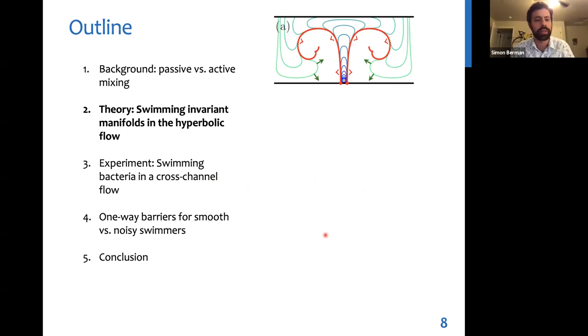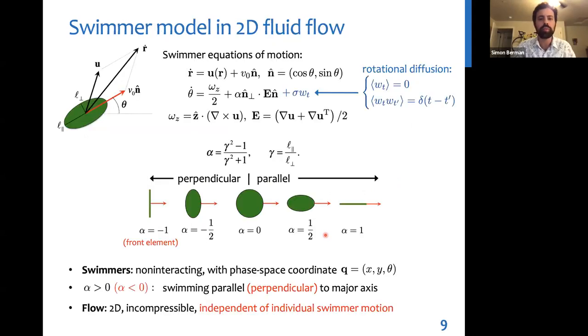So let me go into our theory in a very simple setting. We consider a simple model of motion of an ellipsoidal swimming particle in a two-dimensional fluid flow, where its velocity is simply the sum of the fluid velocity u and its intrinsic velocity at a fixed speed v0. And since we're in two dimensions, the direction of its motion n hat is fully characterized by the angle theta. And since it's an ellipsoidal particle, then this angle theta will change because the particle rotates due to gradients in the fluid velocity.